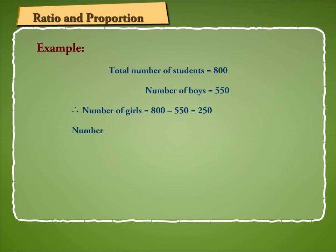So, number of boys is to number of girls is equal to 550 is to 250 is equal to 11 is to 5.